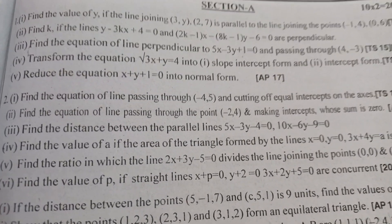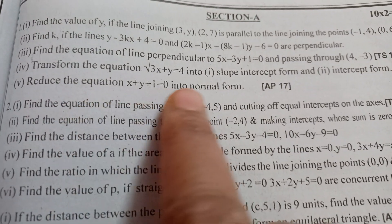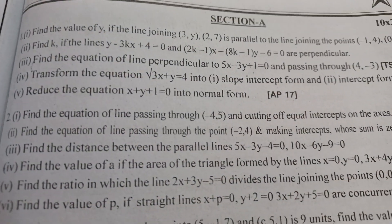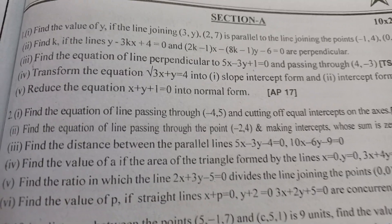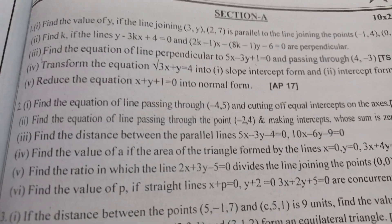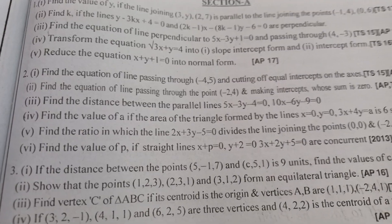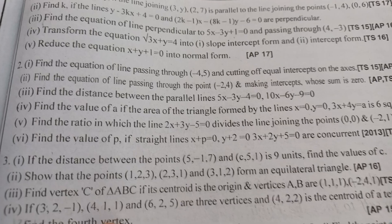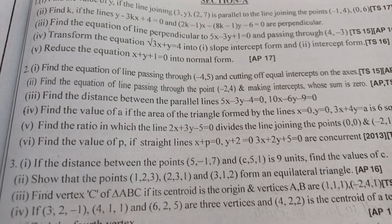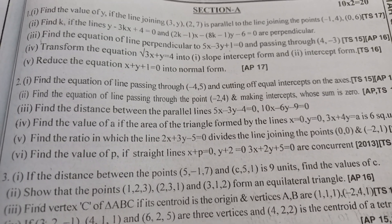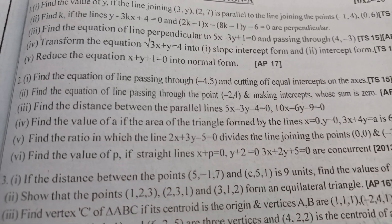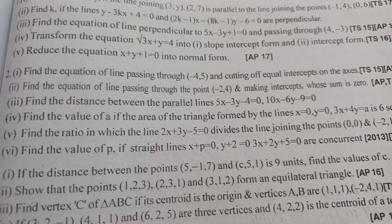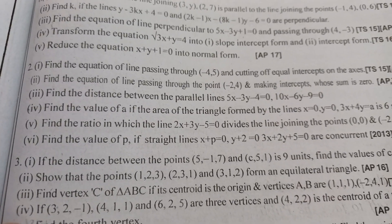Transform the equation — compulsory. The equation can be transformed into slope intercept form, intercept form, and normal form. When we have to choose a question we have to choose the parallel form — whose sum is zero, whose sum is 10. That model question is compulsory. Distance between parallel lines is also important.